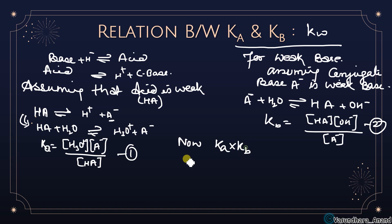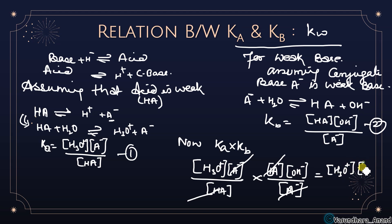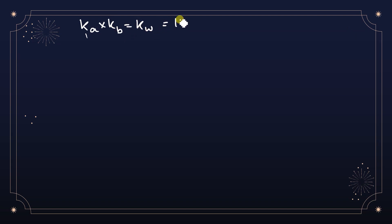Now multiply Ka × Kb: Ka × Kb = ([H₃O⁺][A⁻] / [HA]) × ([HA][OH⁻] / [A⁻]). The [HA] and [A⁻] terms cancel, leaving Ka × Kb = [H₃O⁺][OH⁻] = Kw. So the relation is Ka × Kb = Kw = 10⁻¹⁴.